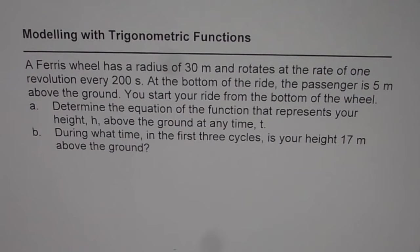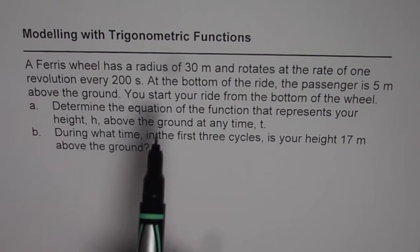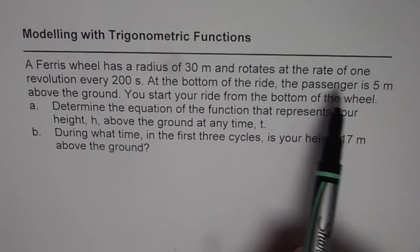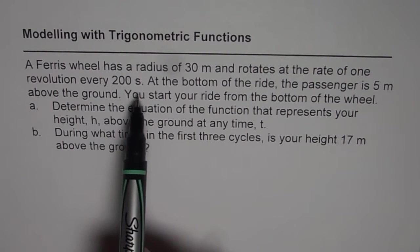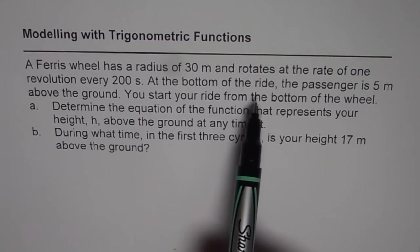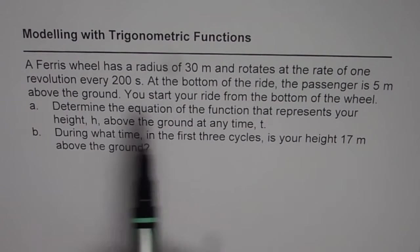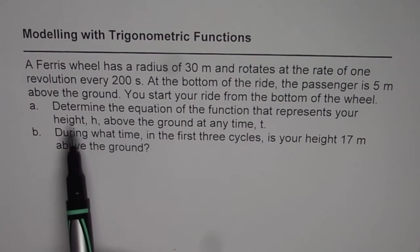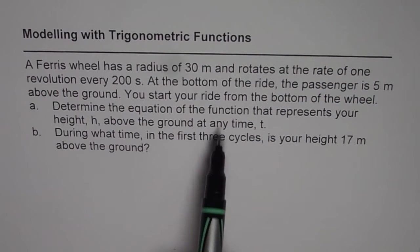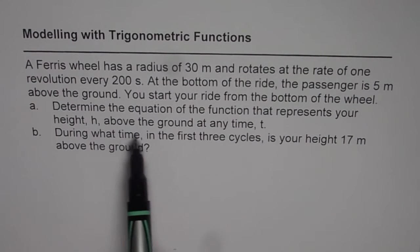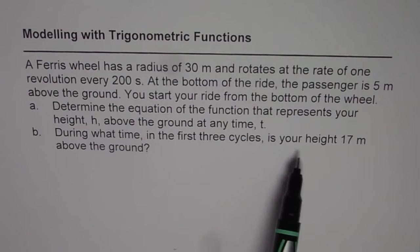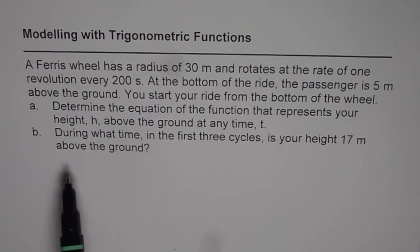A Ferris wheel has a radius of 30 meters and rotates at the rate of 1 revolution every 200 seconds. At the bottom of the ride, the passenger is 5 meters above the ground. You start your ride from the bottom of the wheel. Determine the equation of the function that represents your height H above the ground at any time T. During what time in the first three cycles is your height 17 meters above the ground?